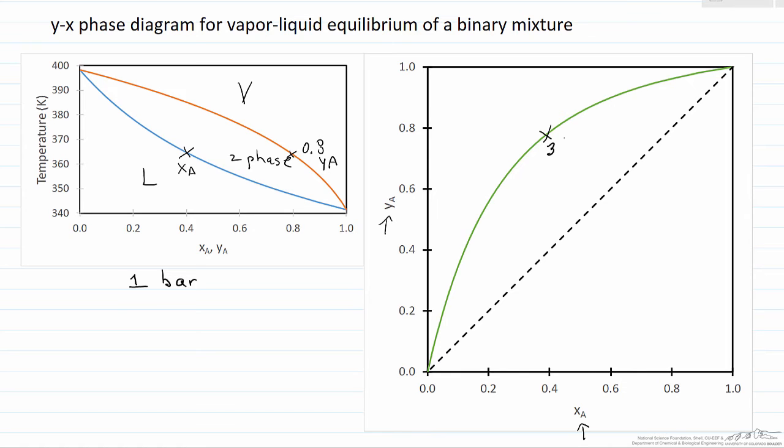From the TXY diagram, we can see this is at 365 kelvin. Now this diagram is also at one bar, because all the data from this diagram is taken from the diagram on the left.